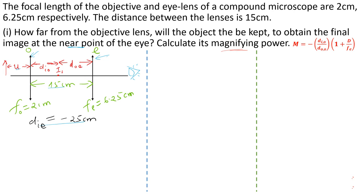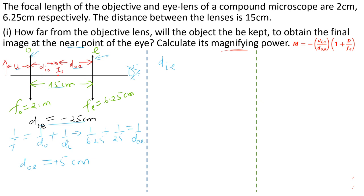Using 1/f = 1/d_object + 1/d_image for the eyepiece: 1/6.25 = 1/d_object_eyepiece + 1/(−25). Since the image distance is negative, this becomes 1/6.25 − 1/25 = 1/d_object_eyepiece, giving d_object_eyepiece = 5 cm. Since the total separation is 15 cm, the image distance for the objective is 15 − 5 = 10 cm.